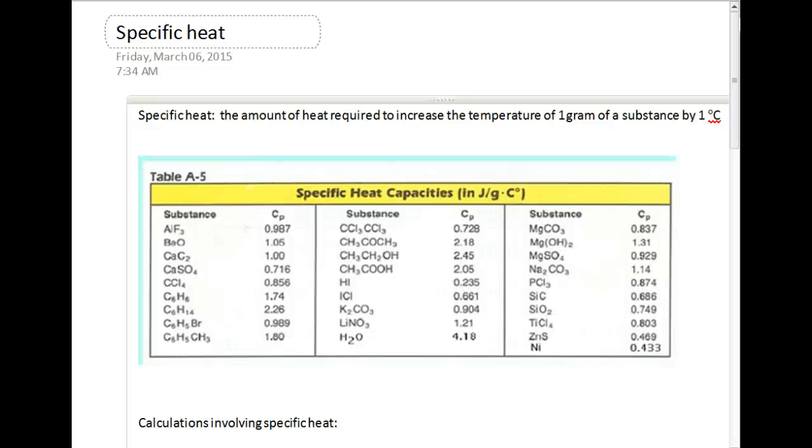Today we're going to be talking about specific heat, also known as specific heat capacity. Let's jump right into it and talk about the definition. Specific heat is the amount of heat that's required to increase the temperature of one gram of a substance by one degree Celsius. Different substances have different specific heat capacities, and it varies from substance to substance.